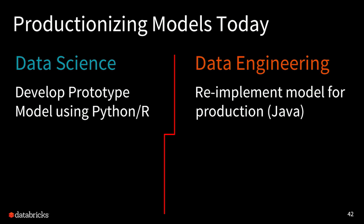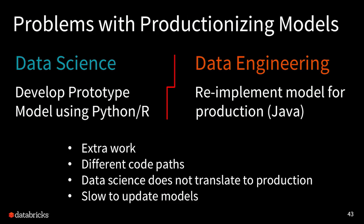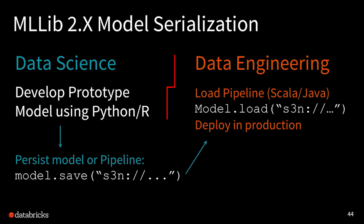Data science today mainly involves prototyping. Most data scientists work in Python or R — those environments aren't typically used in production. In order to take your models and move them into production, you typically have to re-implement the model in Java or C or C++. This is not ideal because it takes extra work, requires different code paths, and is slow to update models. One of the things introduced in MLlib in Apache Spark 2.x was model serialization. It allows you to continue to use Python or R to train your model, but then productionize it — save that model to a file and reload it in Java. Because Apache Spark supports Java, Scala, Python, R, and SQL, you can mix and match those languages and still use the same underlying engine including MLlib.